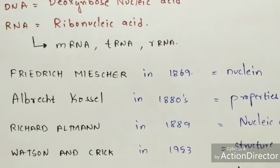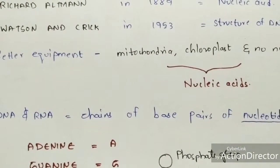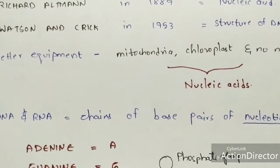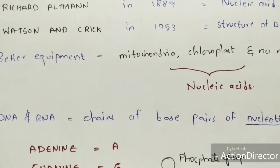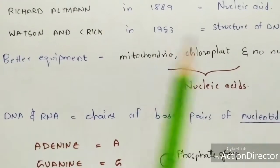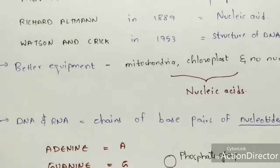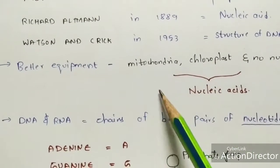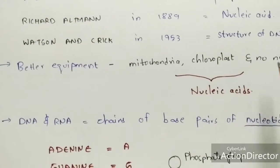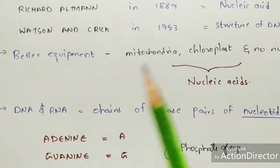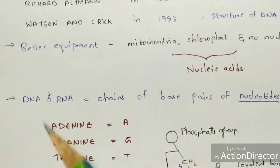In 1953, Watson and Crick discovered the structure of DNA. Based on better equipment and research after that, it also came to be known that mitochondria, chloroplasts, and cells without a nucleus — such as viruses and some bacteria — also consist of nucleic acids, that is, DNA and RNA.